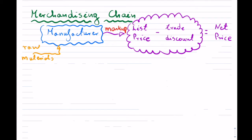What happens is that this list price — so we have this right here — often what companies will do when they're selling to other companies in between, they will try to provide a discount on this to entice you to buy. So trade discounts are basically a discount to entice another company to buy your product. If you're going to be reducing it by a certain price, maybe for a limited time or maybe if you buy a certain amount of product, you're going to get a discount. So we have our list price, and then we subtract the trade discount, and the net price is the price per item that a company would get.